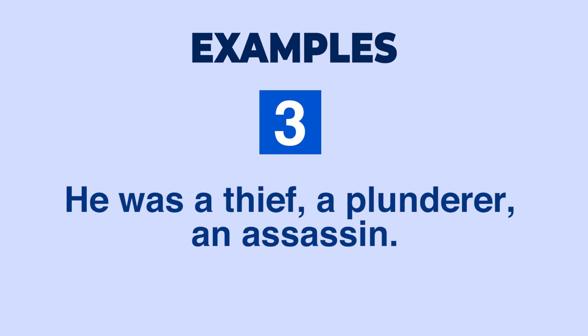Example three: 'He was a thief, a plunderer, and an assassin.' Thief, plunderer, and assassin are arranged sequentially in ascending order of importance by the seriousness of the crime. Being a thief is the least serious crime; being a plunderer is at the second level of importance; and being an assassin is at the highest level of importance.